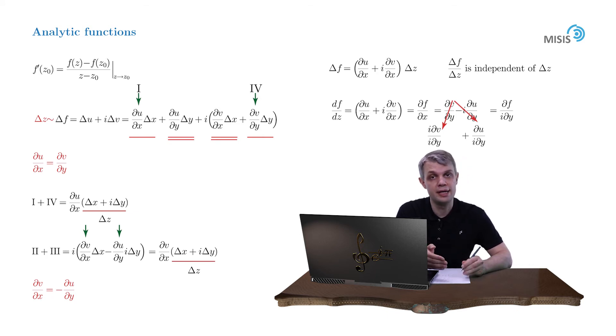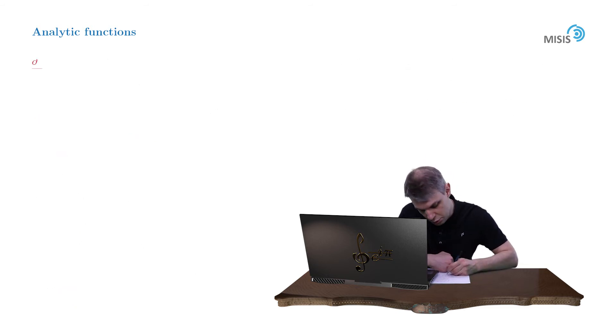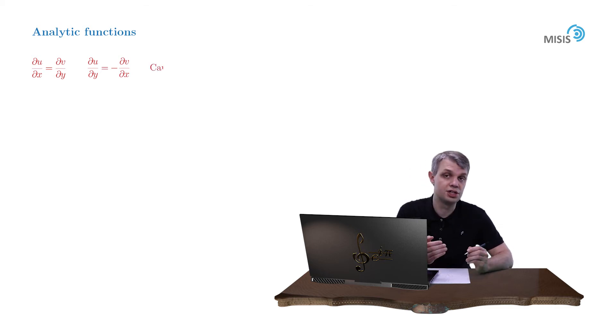So due to their importance, let's rewrite our conditions again: du/dx equals dv/dy and du/dy equals minus dv/dx. These are called the Cauchy-Riemann conditions for the differentiability of the function at some point in the complex plane. They have fundamental importance in complex analysis.